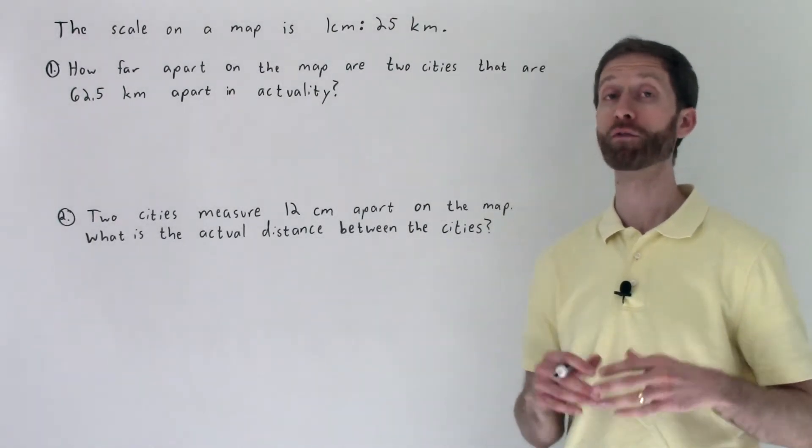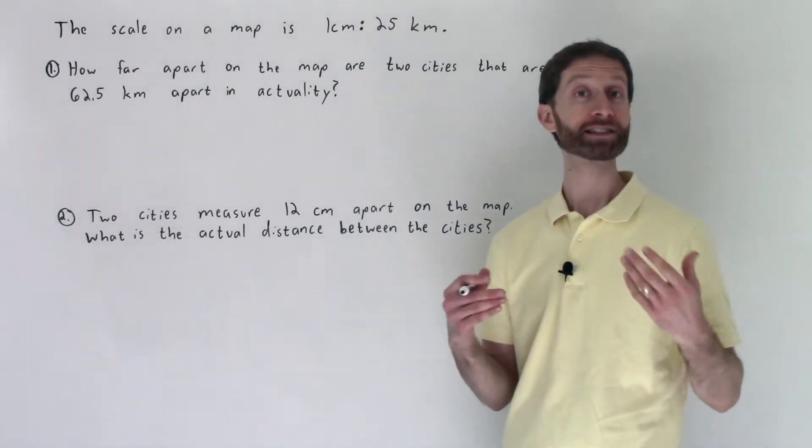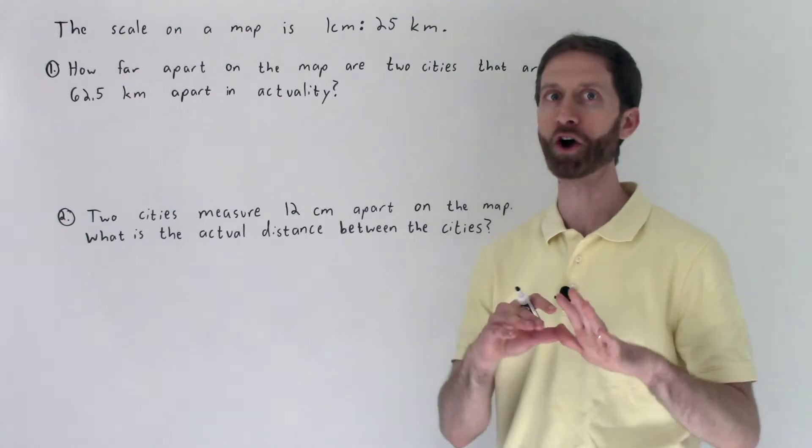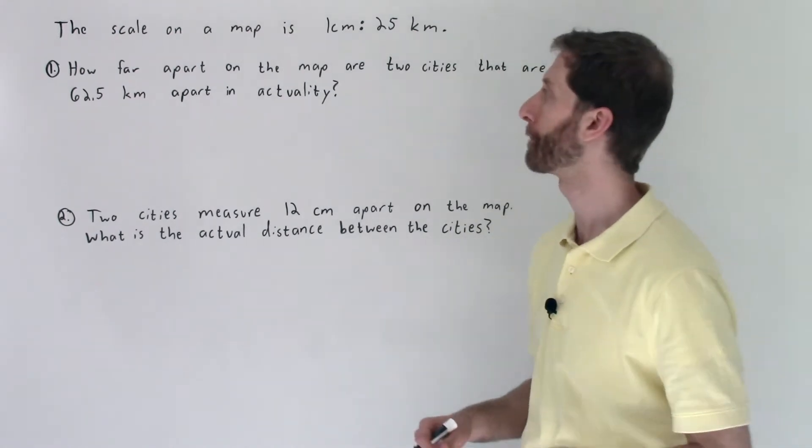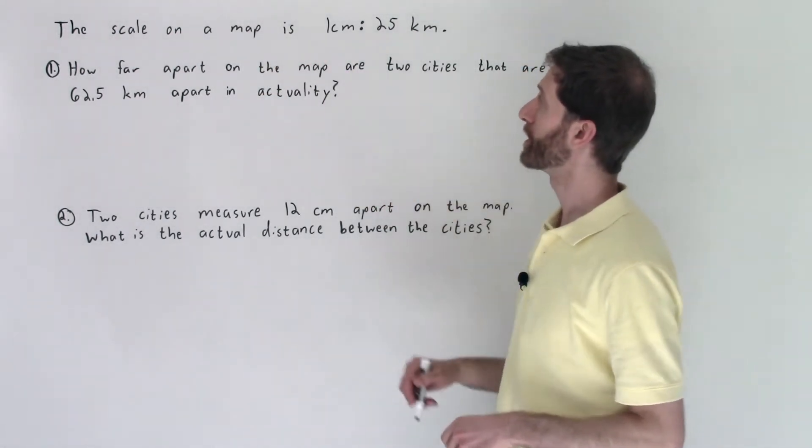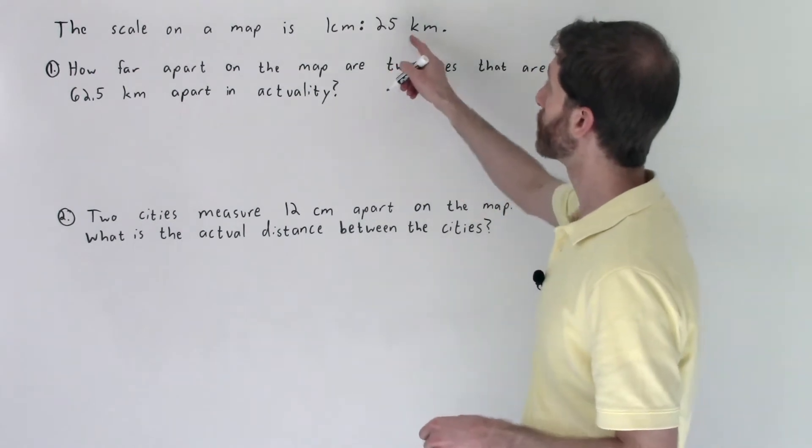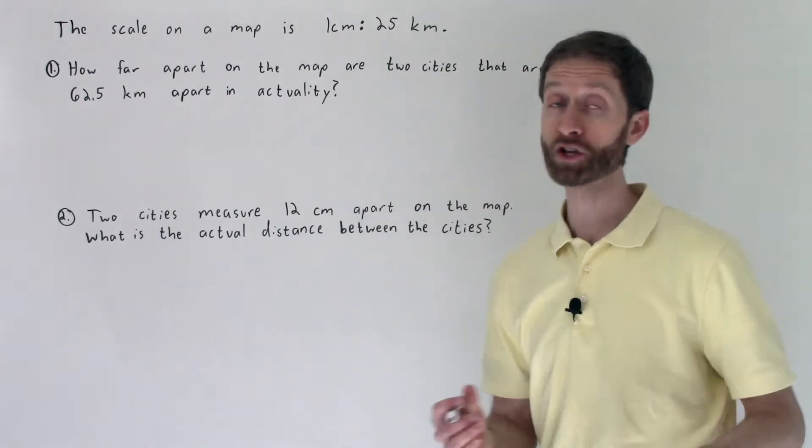In this video we're going to go over some word problems that involve scales. Proportions are all over these things. Let's check it out. The scale on a map is one centimeter to 25 kilometers, so that's the ratio that we're given.